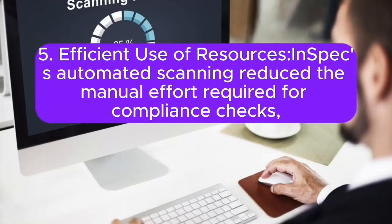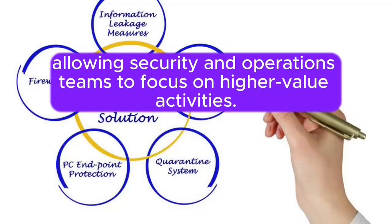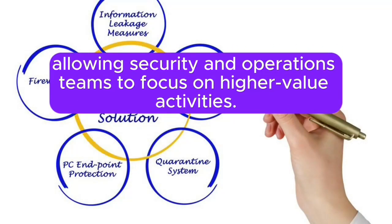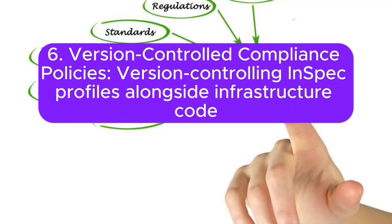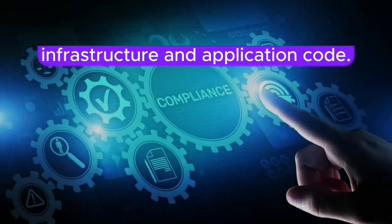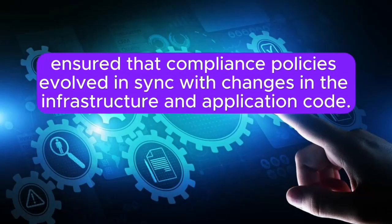Outcome 5: Efficient Use of Resources. InSpec's automated scanning reduced the manual effort required for compliance checks, allowing security and operations teams to focus on higher-value activities. Outcome 6: Version-Controlled Compliance Policies. Version controlling InSpec profiles alongside infrastructure code ensured that compliance policies evolved in sync with changes in the infrastructure and application code.